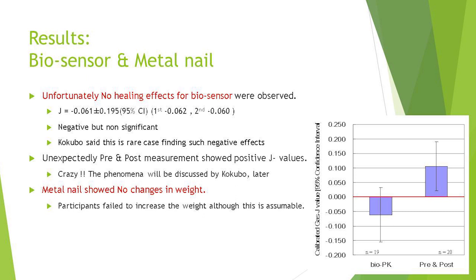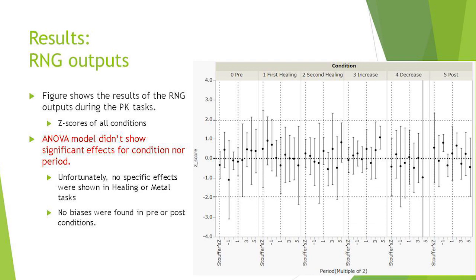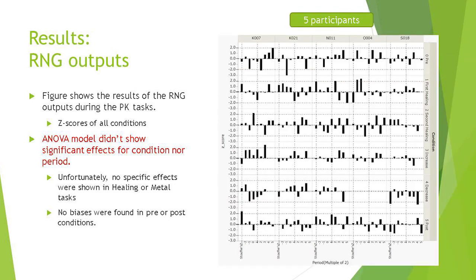And metal nail showed no changes in weight. This is, yeah, assumable. So, the figure shows the result of the RNG outputs during the PK tasks. Z-scores of all conditions. ANOVA model didn't show significant effects for conditions. No apparent biases were found. This is raw data from the analysis.